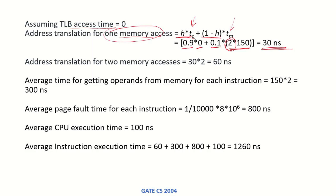Since each instruction has two memory accesses, there will be two address translations, giving 30 × 2 = 60 nanoseconds for address translation. The time to fetch the operands from memory is also based on two memory accesses: 150 × 2 = 300 nanoseconds.